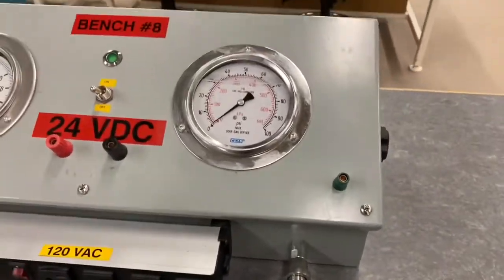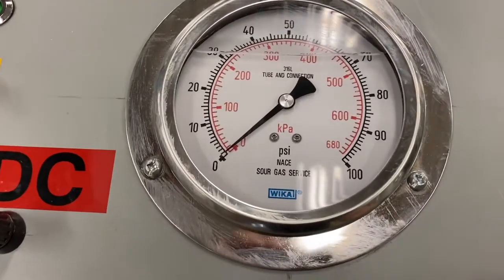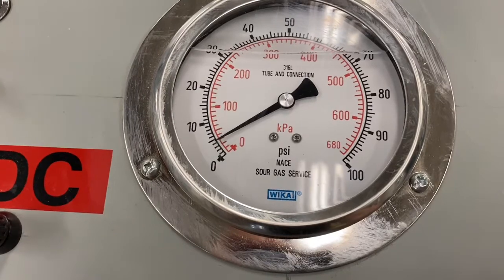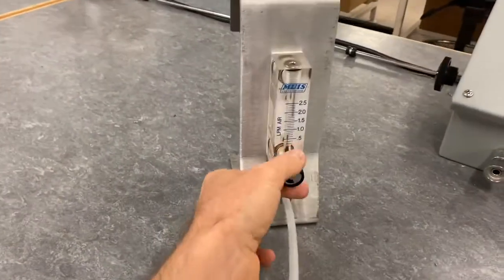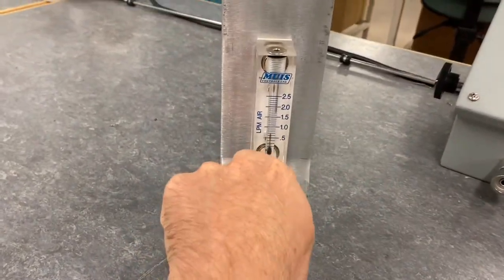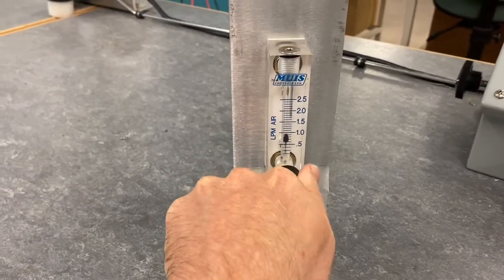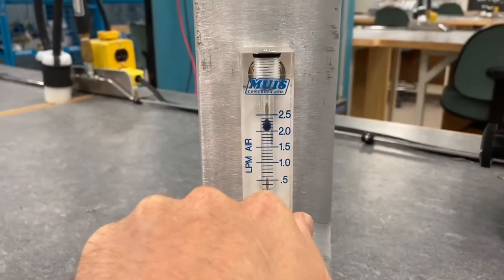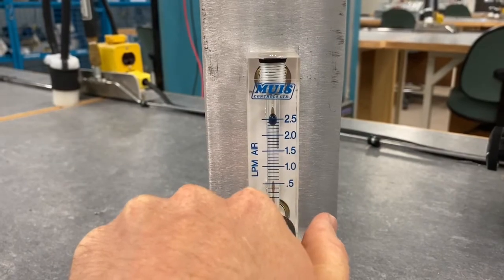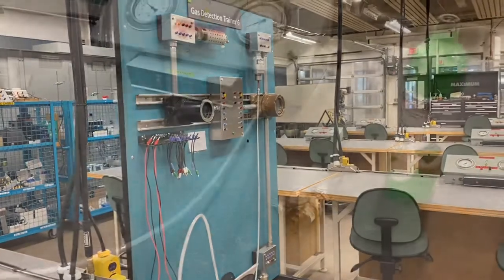I'll increase the pressure here and we should see this gauge pop up to about five PSI. There, about five PSI. If we go over to our variable air meter, it's important to have this shut when we start, because if we have it fully open, it'll fire the ball right to the top quickly. I'll just open this and we'll raise it up. We'll go up to 2.5 liters per minute. We want to make sure that ball is in the center of the line. We have 2.5 liters per minute of instrument air flowing to that sensor right now.